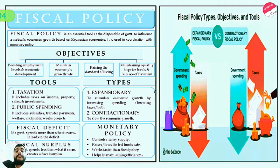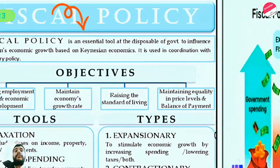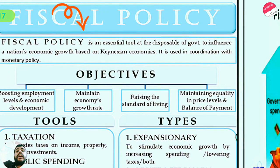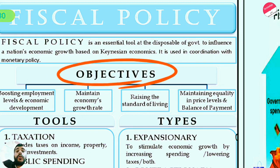There are two pictures summarizing fiscal policy. Fiscal policy is an essential tool at the disposal of the government to influence a nation's economic growth. Based on Keynesian economics, it is used in coordination with monetary policy. The objectives are boosting employment levels, economic development, maintaining the economy's growth rate, raising the standard of living, and maintaining equality in price levels and balance of payments.